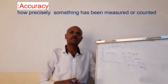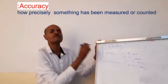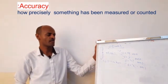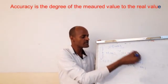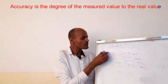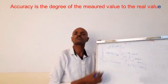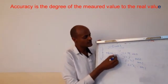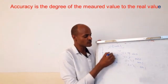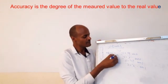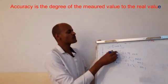The accuracy is the closeness of the measured value to the real value — that is the definition of accuracy. So which one is more accurate? 4.9 to 5, 4.5 to 5, 5.4 to 5, or 5.2 to 5.5?